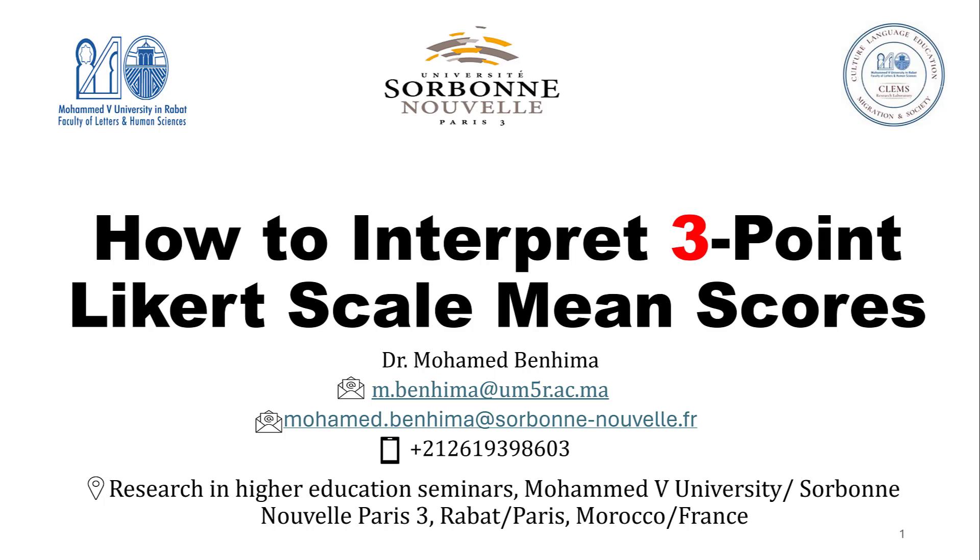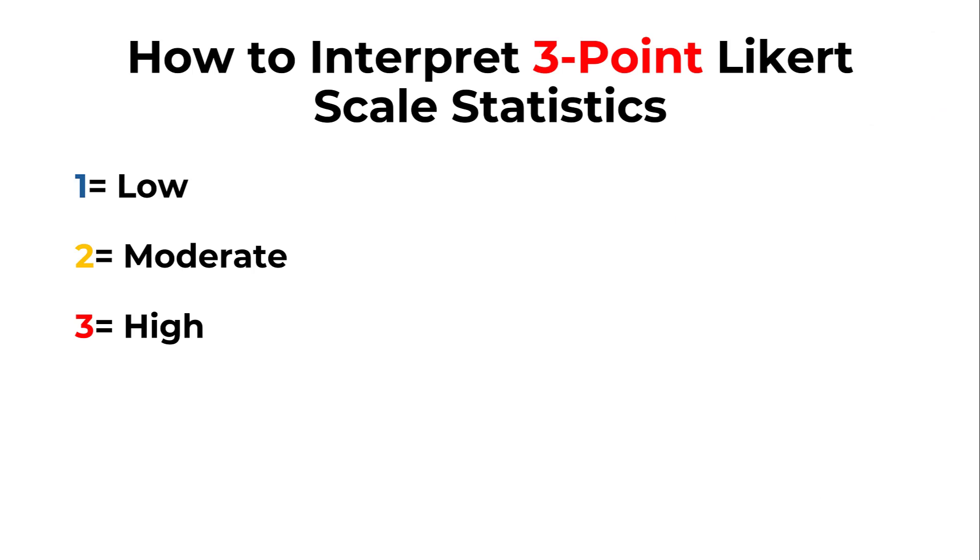How to interpret three-point Likert scale based on the mean scores? First, we need to code the three-point Likert scale from one responding to low value like strongly disagree, two to moderate value like neutral or sometimes, and three to higher values like high, often, or strongly agree. This is the codebook that we need to follow.